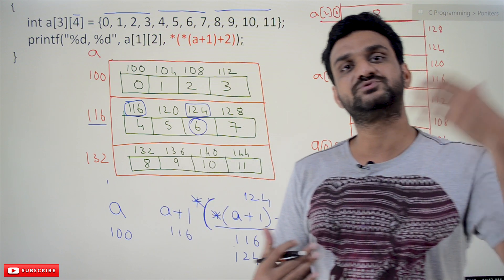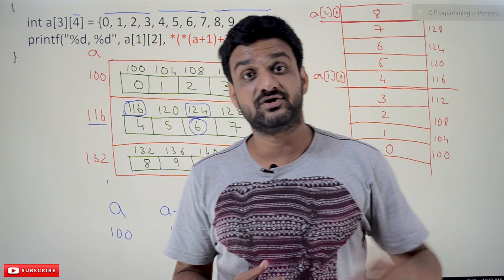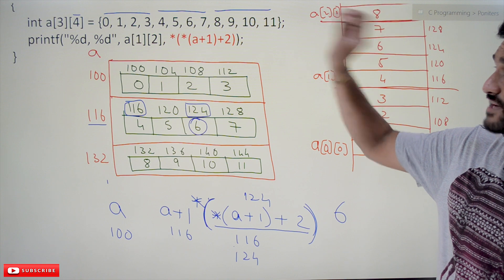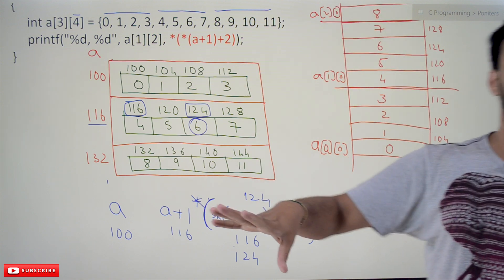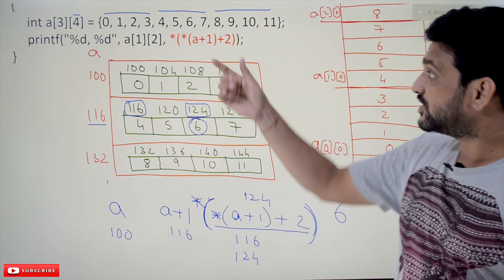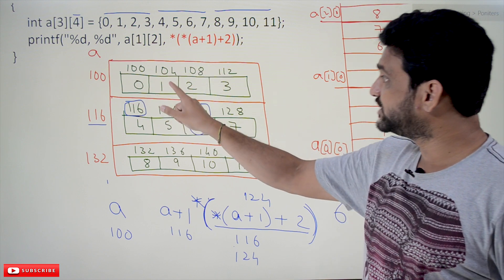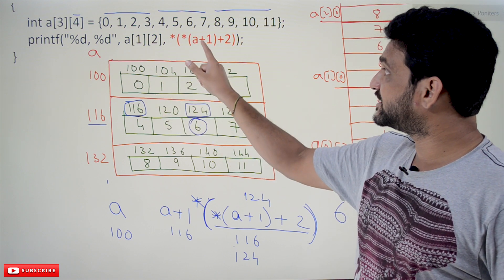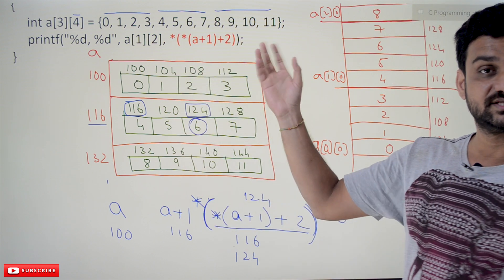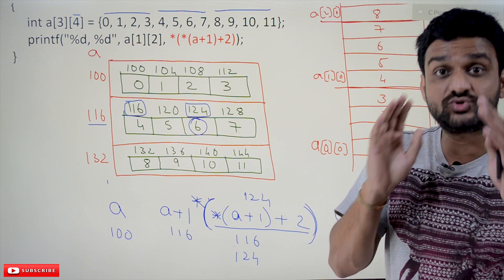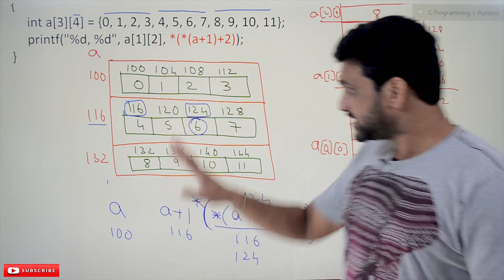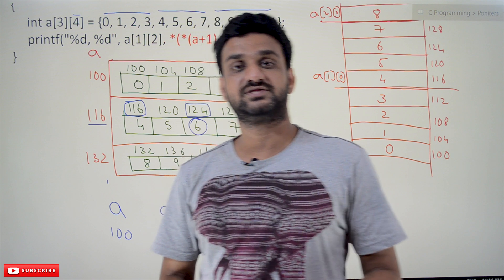We have covered two-dimensional arrays here; three-dimensional array concepts will be covered in later videos. These examples are very important and are very frequently asked in placement interviews and GATE questions. A common mistake is thinking a+1 just moves by one integer step, but for two-dimensional arrays that is not how it works — please make sure you understand this point.